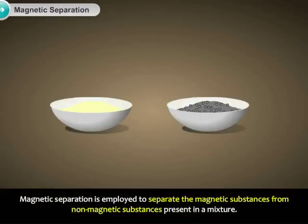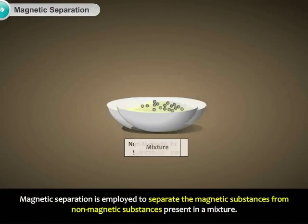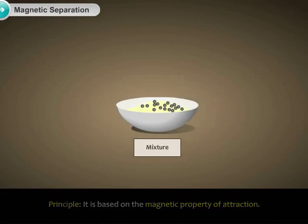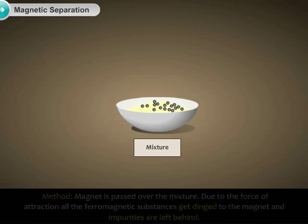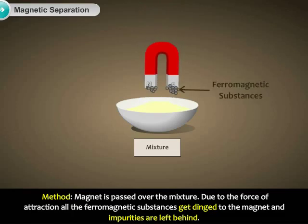Magnetic separation is employed to separate magnetic substances from non-magnetic substances present in a mixture. Principle: It is based on the magnetic property of attraction. Method: A magnet is passed over the mixture. Due to the force of attraction, all the ferromagnetic substances get attached to the magnet and impurities are left behind.